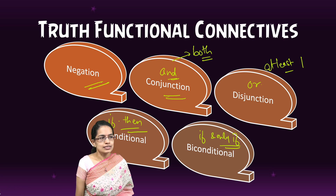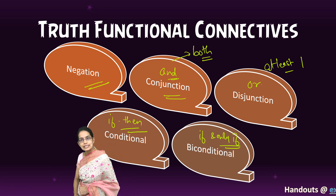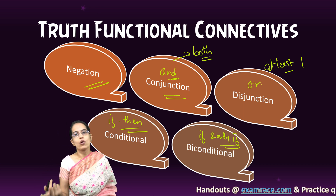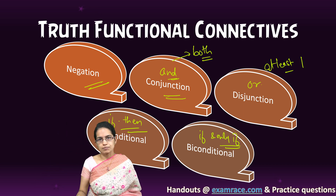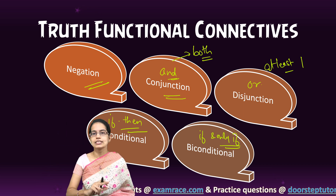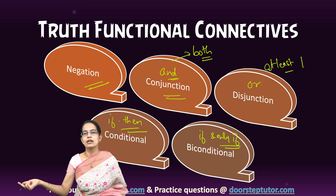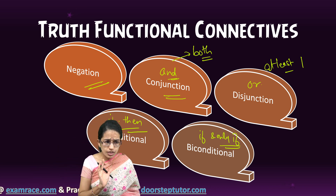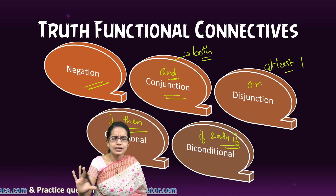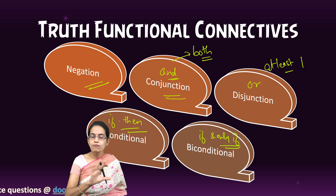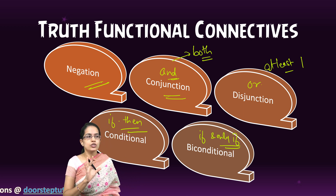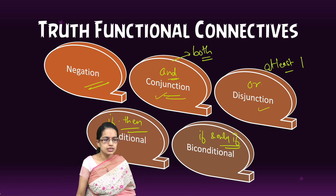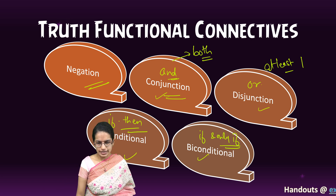There is another interesting truth functional which is known as negation. Negation is simply the false of a statement — when I say 'it is cloudy' and 'it is not cloudy,' 'it is not cloudy' is a negation of the first statement. Primarily, we focus on the four truth functionals: conjunction, disjunction, conditional, and bi-conditional.